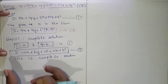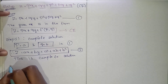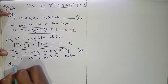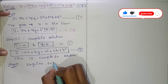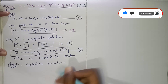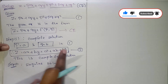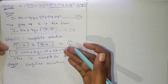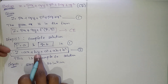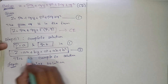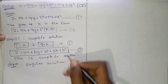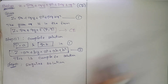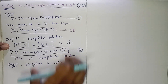The next step is to find the singular solution. A singular solution is a solution without any arbitrary constants. So we need to eliminate the constants A and B from equation number two to form the singular solution.